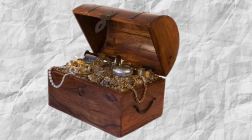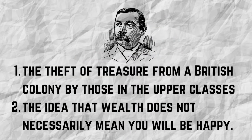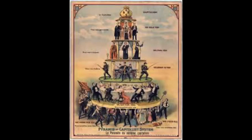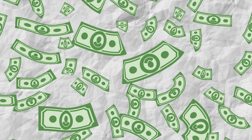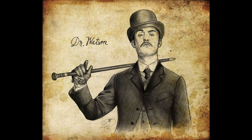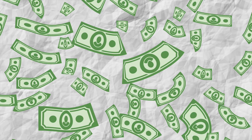The Agra treasure is at the heart of this story and represents a life-changing amount of riches. Doyle is raising two issues here: the theft of treasure from a British colony by those in the upper classes, and the idea that wealth does not necessarily mean you will be happy. Class was still a big social divide at the time. Through Dr Watson and Miss Morstan's developing relationship, Doyle examines what effect it would have on their relationship if she inherited her father's fortune, albeit from immoral gains. Watson assesses that Miss Morstan's impending wealth will make her part of the upper classes and essentially put her out of his league. Wealth then is intimately linked to social status, and social status defines who can fall in love with whom.